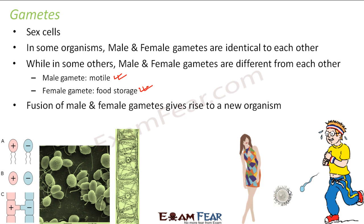This is how the female and the male sex cell look in human beings - the male gamete is capable of moving and the female gamete doesn't move but has the capability to store food. Fusion of male and female gametes gives rise to a new organism - both fuse together to form a new organism. These two gametes contain half the amount of DNA, so when they combine the amount of DNA becomes the same as what is present in all other cells of the body.